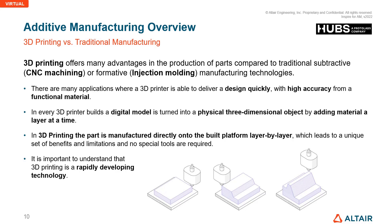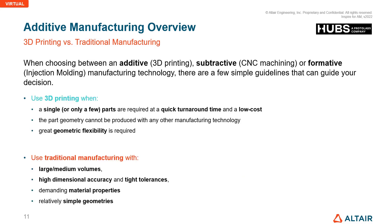3D printing offers many advantages in the production of parts compared to traditional manufacturing. Traditional manufacturing includes CNC machining, injection molding, and casting technologies. There are many applications where a 3D printer can deliver designs quickly, achieving complex design and high accuracy. A 3D printer builds a digital model turned into a physical three-dimensional object by adding material layer by layer — it is a rapidly developing technology.